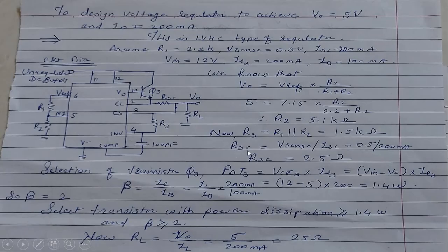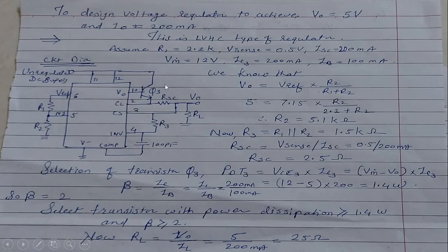Now we calculate RSC using the formula RSC = Vsense / ISC. With Vsense = 0.5 V and ISC = 200 mA, substituting these values gives RSC = 2.5 Ω.